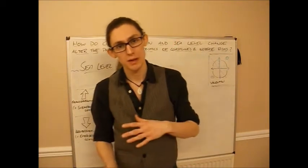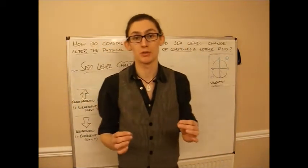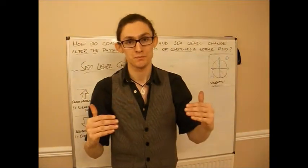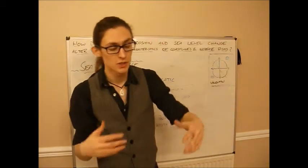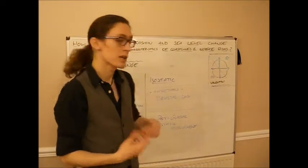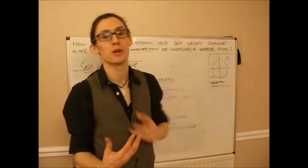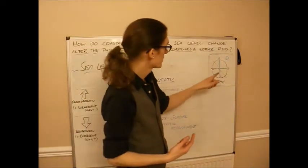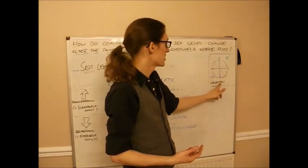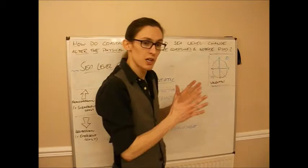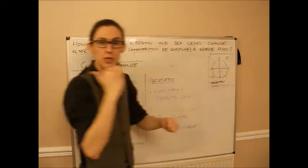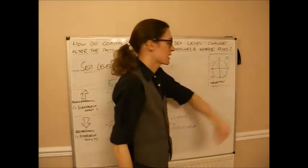We're going to be thinking particularly about sea level change because it does have a huge effect on the coast. Sea level change can come about for various reasons, but the first thing to remember is that sea level can go up or it can go down. This diagram here, the Valentin diagram, shows that coasts can either expand outwards or upwards, or retreat backwards or downwards.